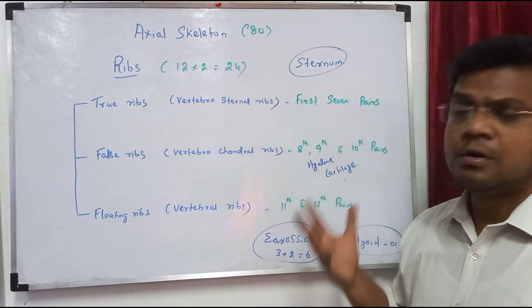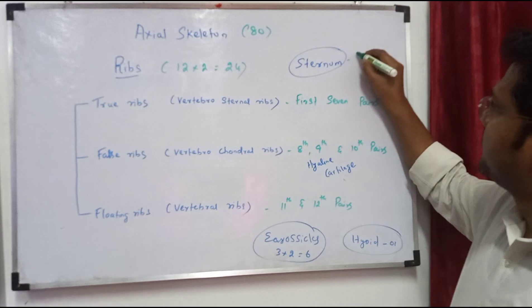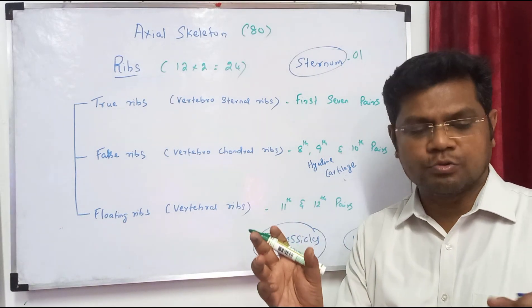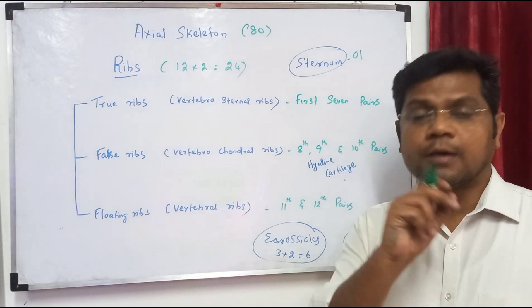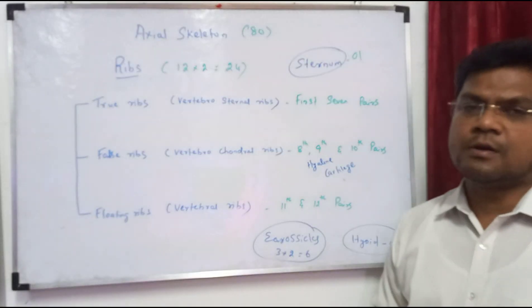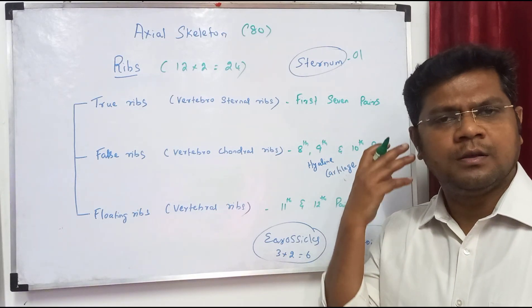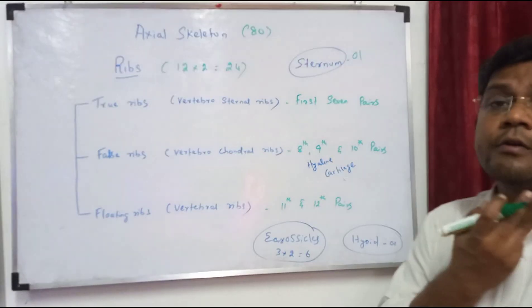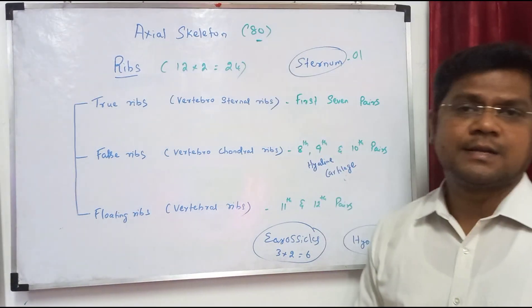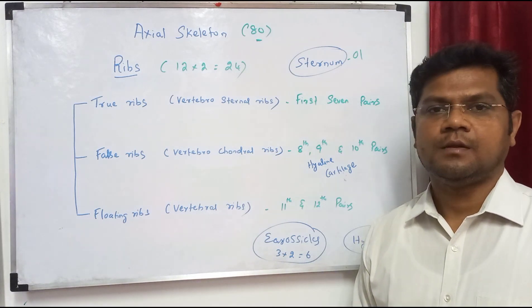So ribs total 12 pairs, which is 24 bones. Sternum is one flat bone. Ear ossicles — there are three in each ear: malleus, incus, and stapes — so three times two equals six. Hyoid bone is one U-shaped bone. So the total axial skeleton has 80 bones.